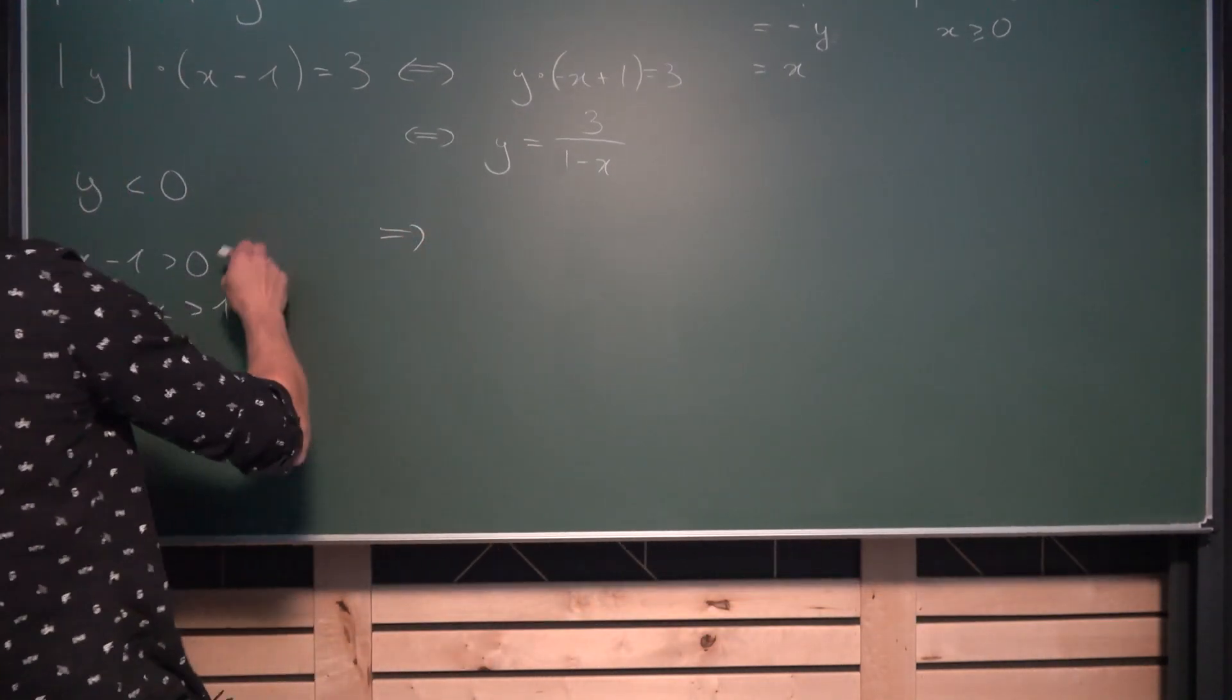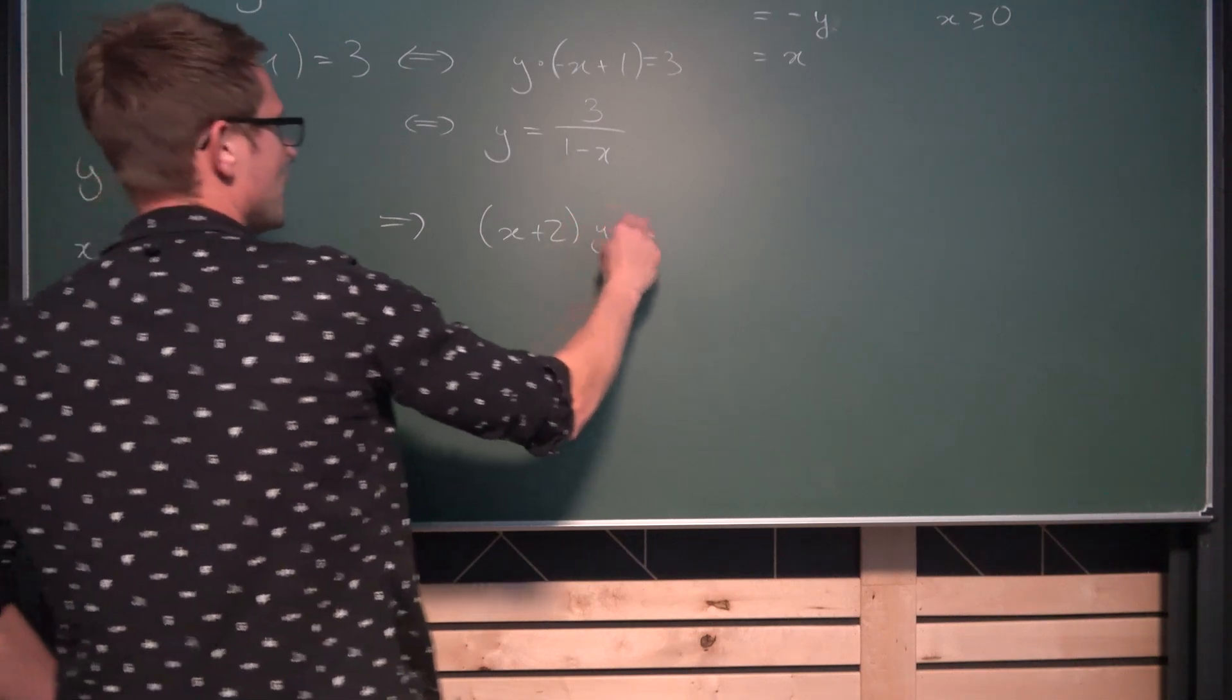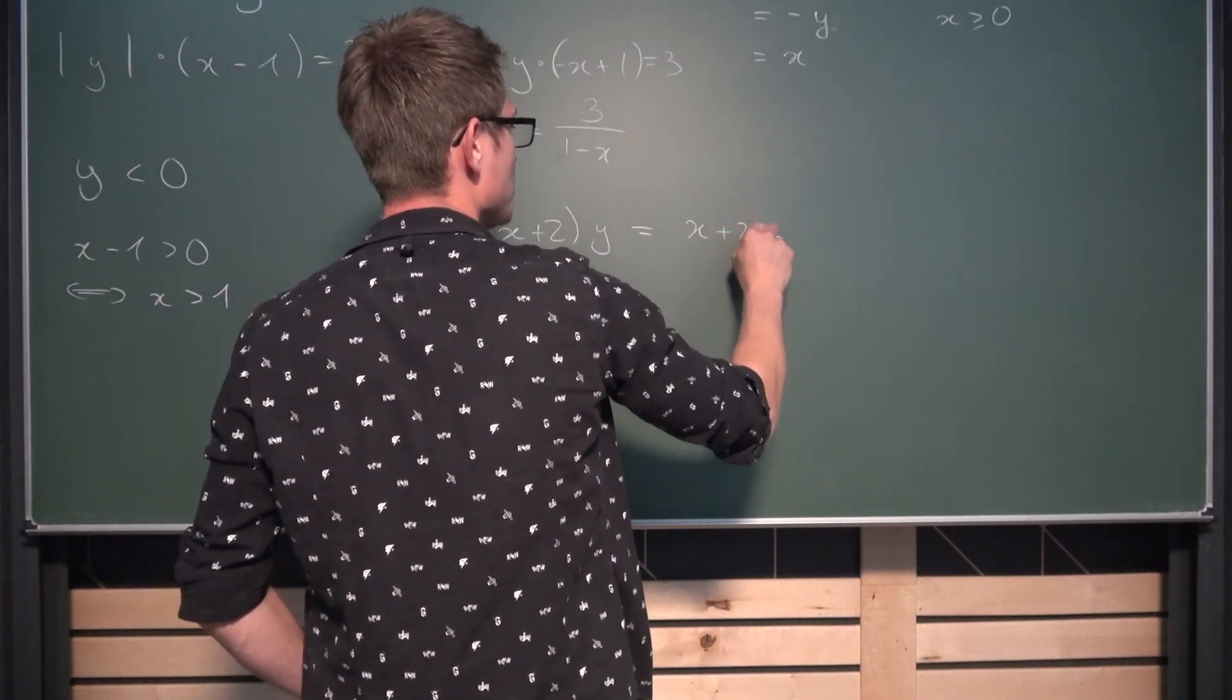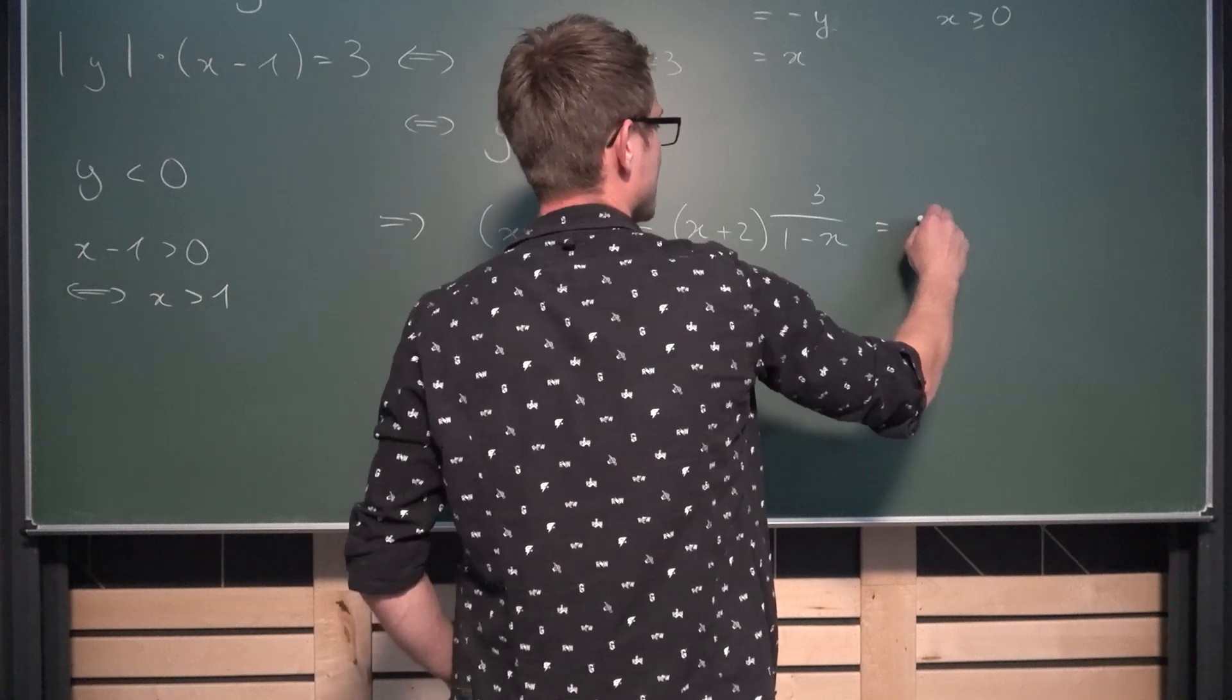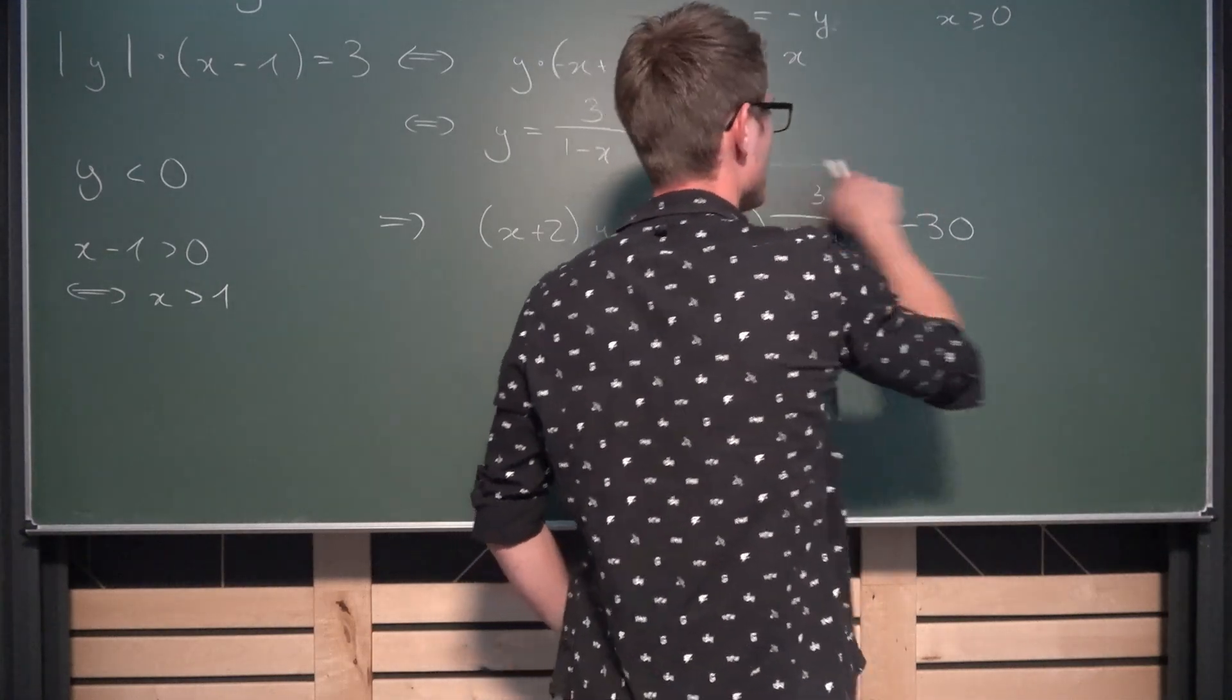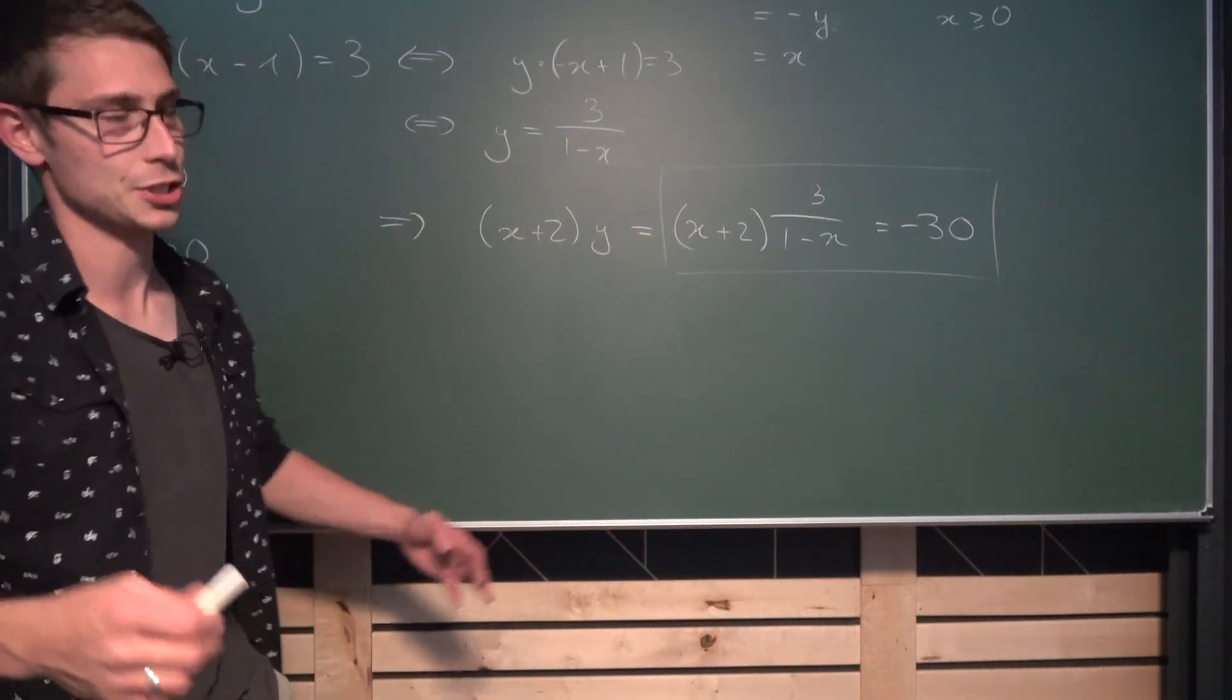Meaning for the first equation, what we are going to get is that this is just x plus 2 times y is equal to negative 30. But what is y? It's 3 divided by 1 minus x. So we got x plus 2 times 3 divided by 1 minus x is equal to negative 30. And now we can just solve this equation and then we are basically done because we get a value for x which we can put into here and then we can just call it quits.